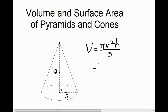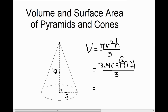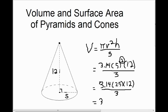Suppose we have a cone with a height of 12 units and a radius of 5 units. To calculate the volume, it's pi r squared times the height, divided by three. Following order of operations, we do the exponent first: 5 squared is 25. Then 3.14 times 25 times 12, divided by 3, gives us 314 cubic units. Whatever units are used for the height and radius would be cubed for the volume.